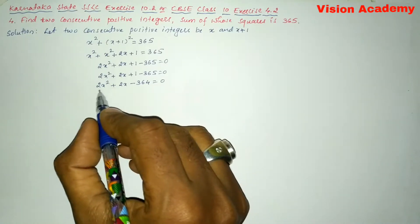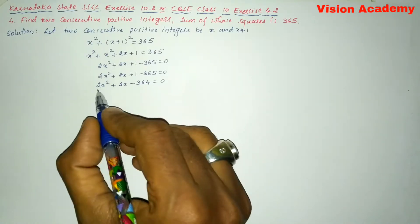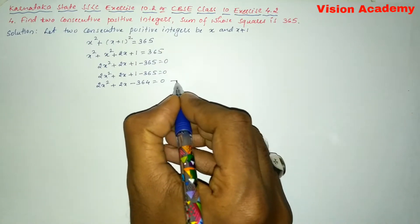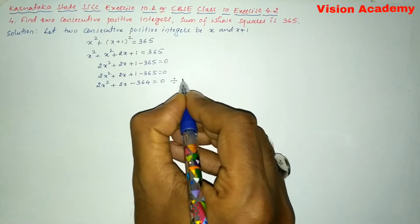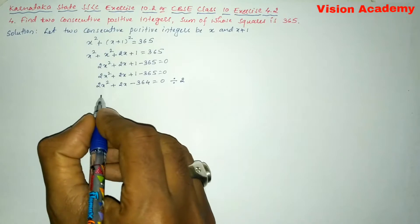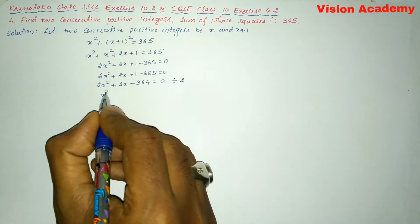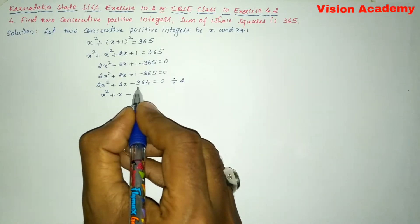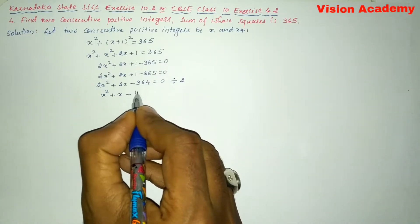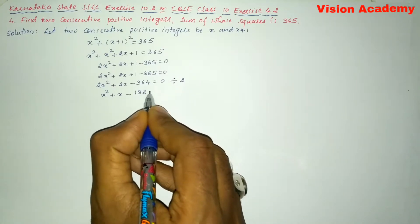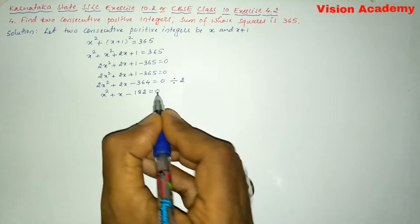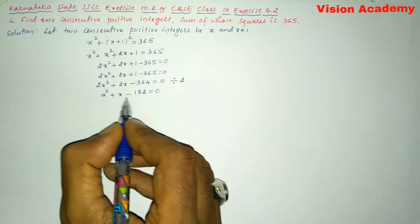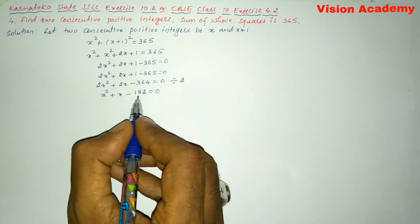You can see that 1 minus 365 gives minus 364, so we have 2x² + 2x - 364 = 0. All terms are divisible by 2, so dividing by 2 we get x² + x - 182 = 0.